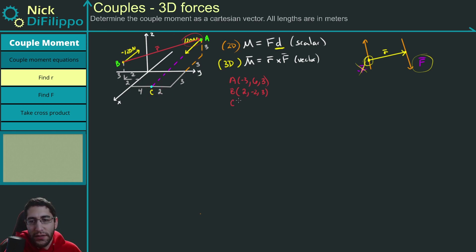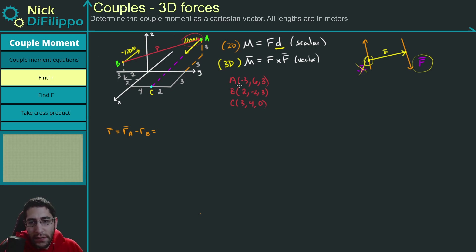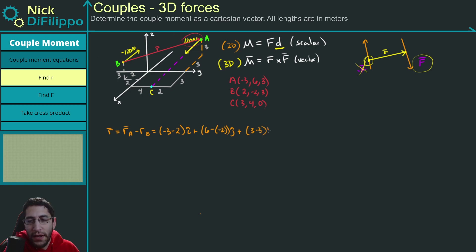For completeness, point C is at X = 3, Y = 4, Z = 0. Now let's compute the R vector pointing from B to A. That's position of A minus position of B, which is (-3 - 2)i + (6 - (-2))j + (3 - 3)k, giving us R = -5i + 8j + 0k. This is my R vector.